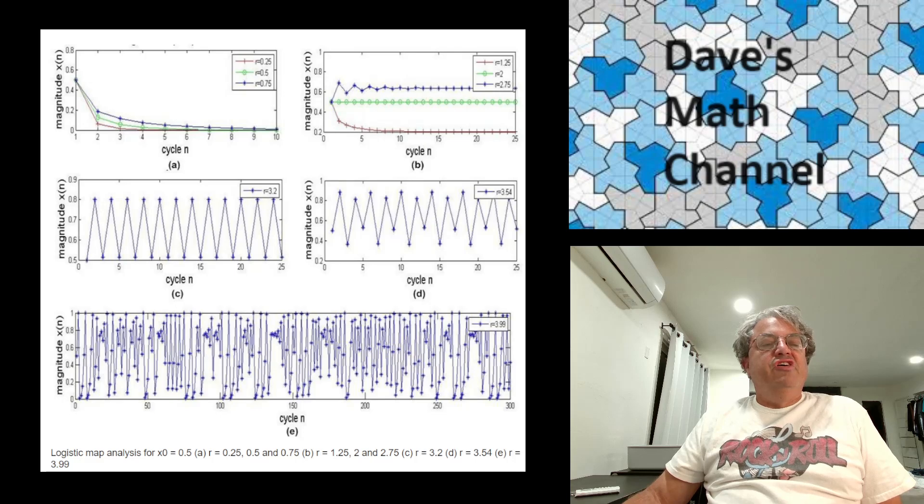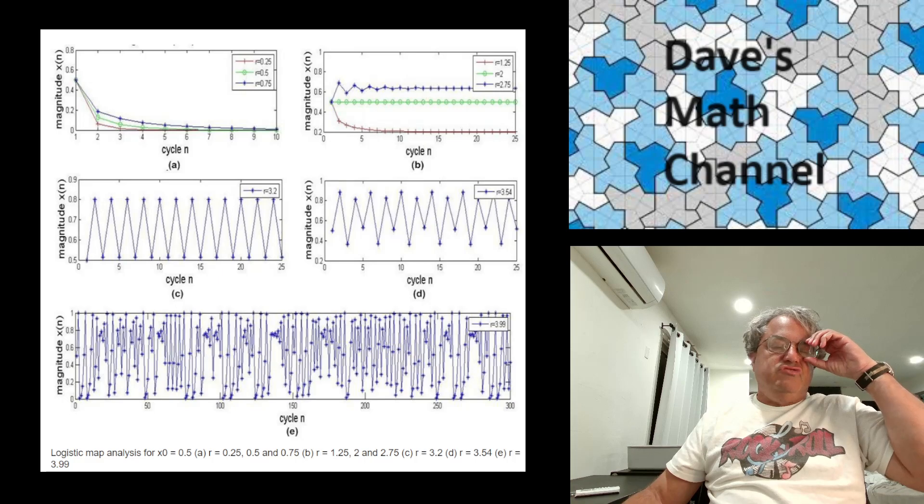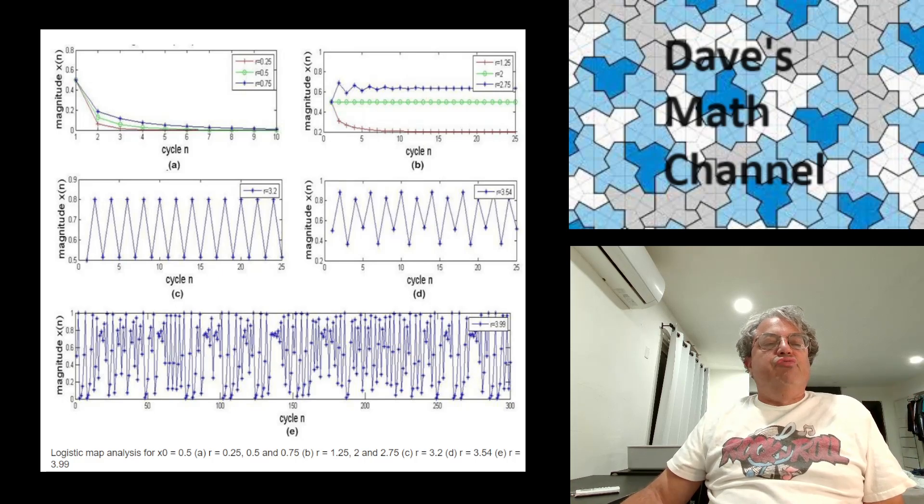In the third graph, the middle left, notice it's oscillating. When R is greater than 3, that's what it does. I think around 3.2, it goes into period 2. Then you increase R a little bit more, like 3.5, it goes into period 4. This is what's known as bifurcation. The period doubles.